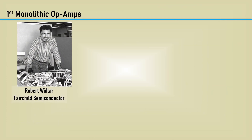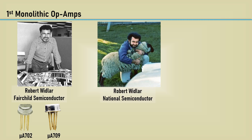In 1963, a 26-year-old engineer named Robert Widlar designed the first monolithic op-amp integrated circuit, the Micro A702, at Fairchild Semiconductor. It sold for $300. Widlar followed up with an improved design, the Micro A709, cutting the cost to $70 and making the chip a huge commercial success. The story goes that the freewheeling Widlar then asked for a raise, and when he didn't get it, he quit. National Semiconductor, now part of Texas Instruments, was very happy to scoop up a guy who was helping establish the discipline of analog IC design.